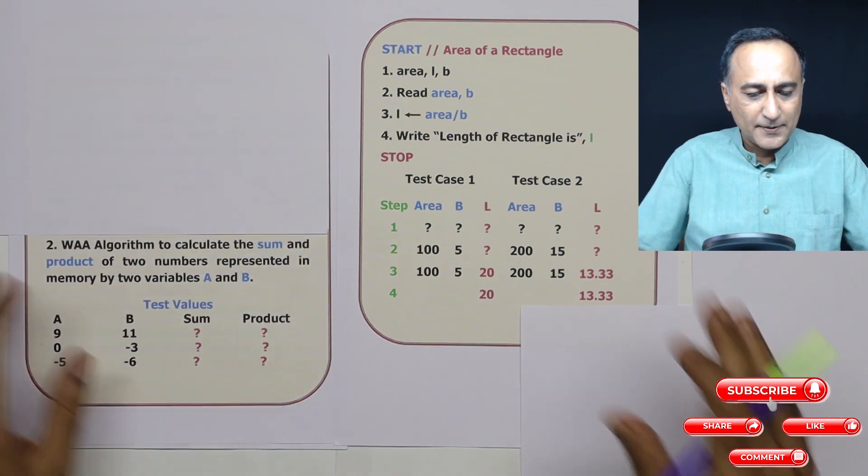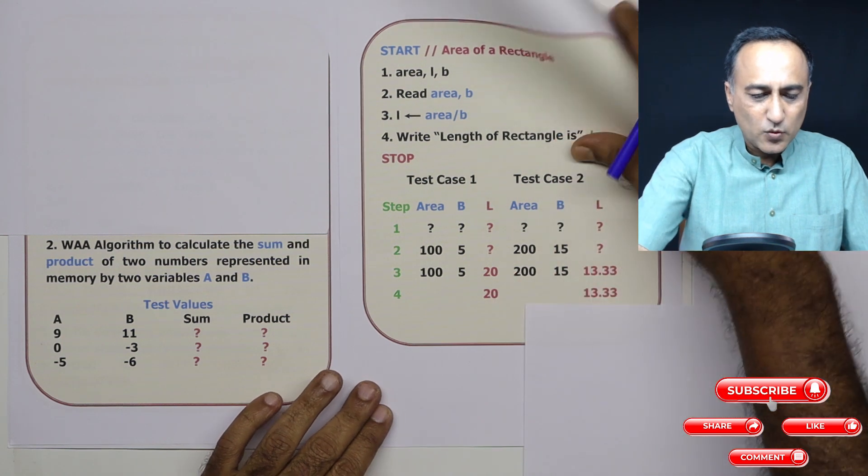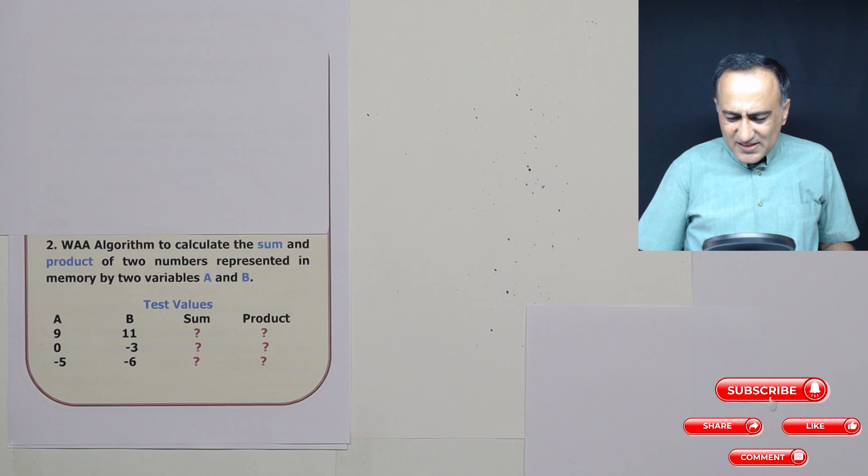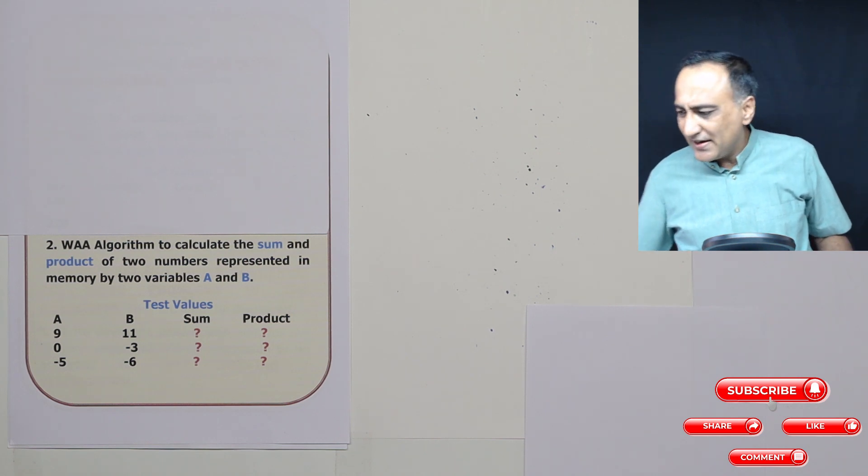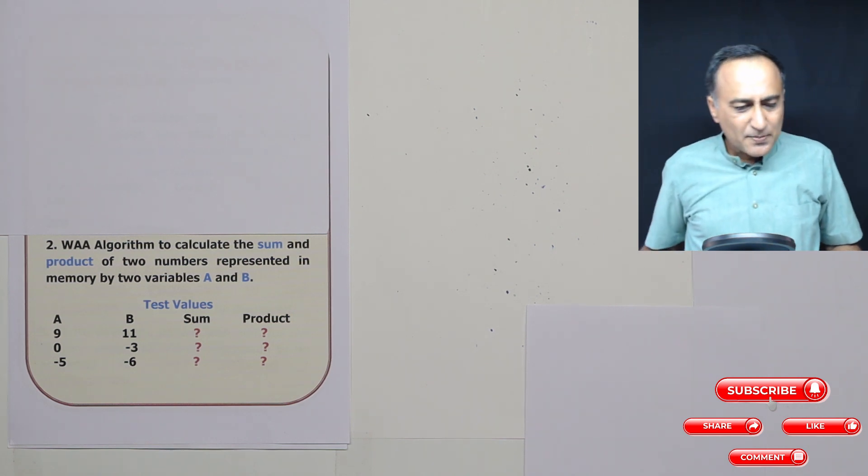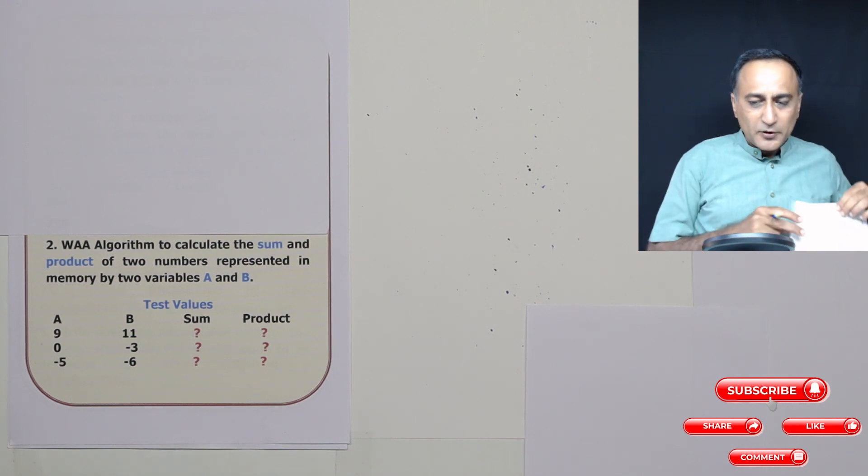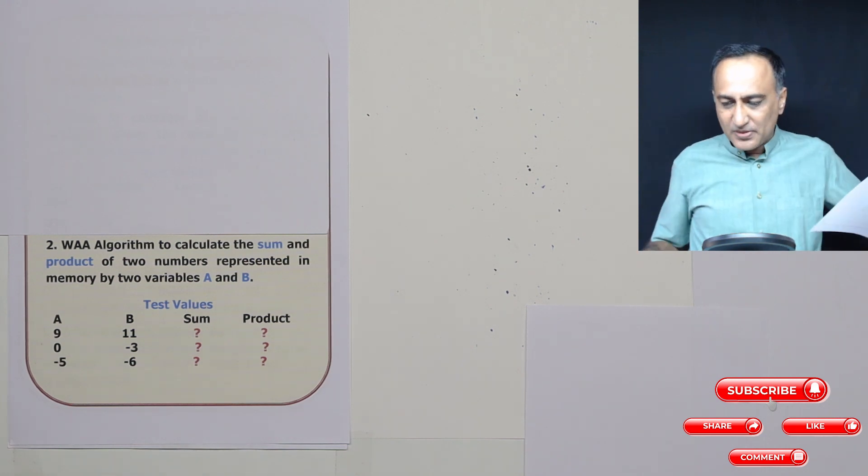Now let's take a look at the next one. In the next problem, I'm asking you to do a simple algorithm to calculate the sum and product of two numbers represented in memory by variable locations A and B.